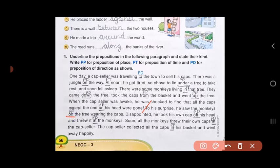The cap seller collected all the caps in his basket. 'In' is telling you the place, so in becomes preposition of place, PP. And went away happily. So here we have marked the preposition and also labeled the types. That is all for today children. Thank you.